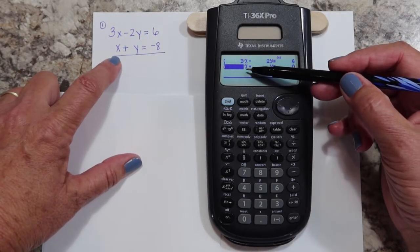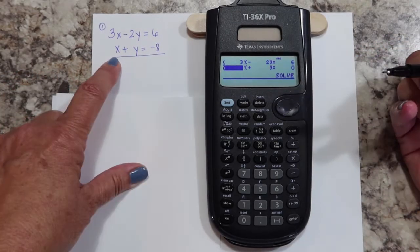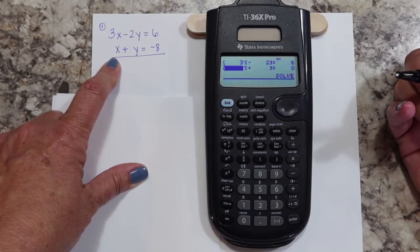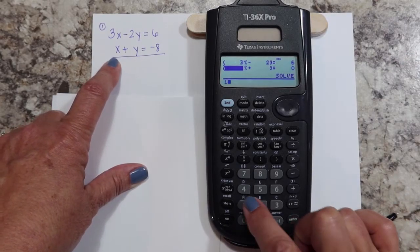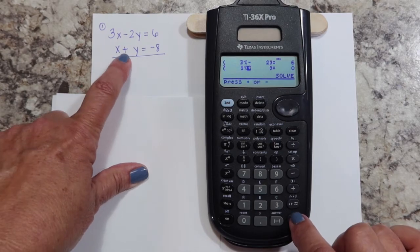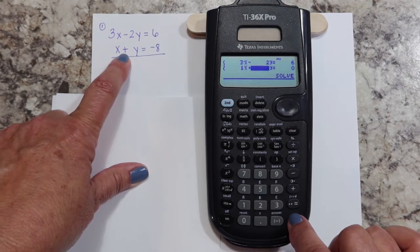Now I'm down here with the second equation. If your variable does not have a coefficient, that's understood to be one, so I'm going to hit the one, enter. My plus is going to stay the same, so just hit enter.